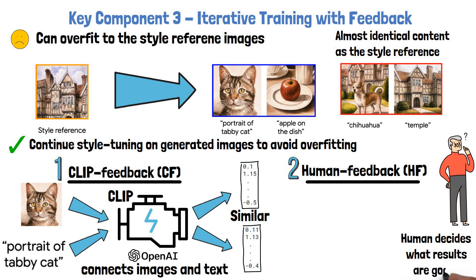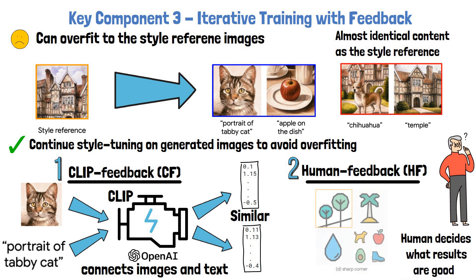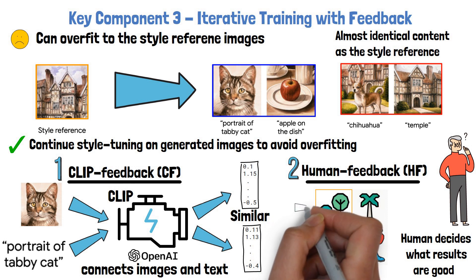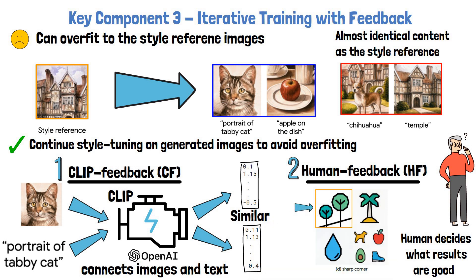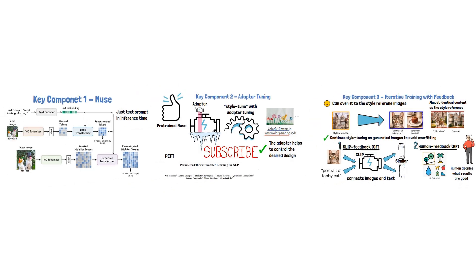They show that with the human feedback method, the user gets creative control and can determine attributes of the final design. For example, here the user chose to prefer images with sharp corners as the one in the upper left, and the final model generated the other three images with sharp corners. Thank you for watching and I hope to see you again in the next video.